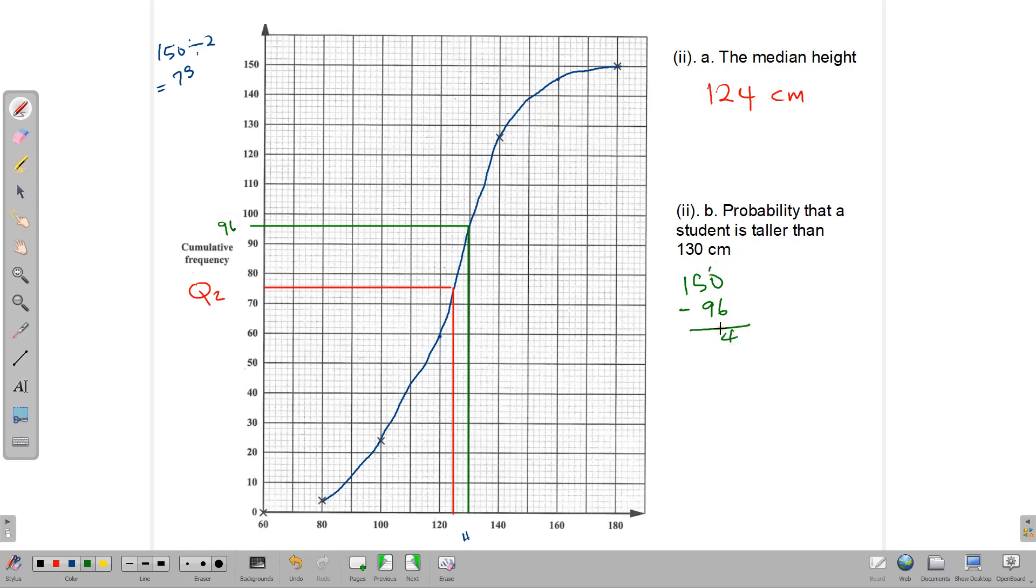So 54 students would be taller than 130. Notice that we have 96 here and the 96 are shorter than 130. The ones that are taller than 130 are the ones that are up here. Those are the ones we need, which is why we subtract 150 minus 96 to get them. And those are the 54.